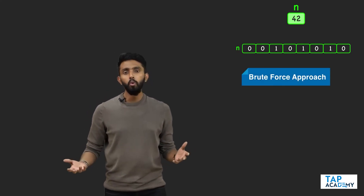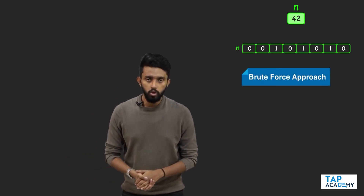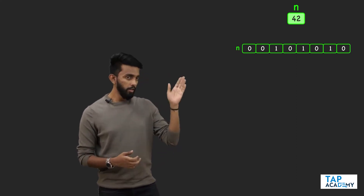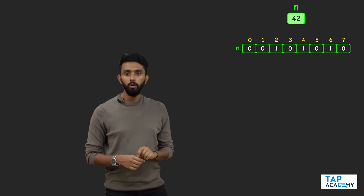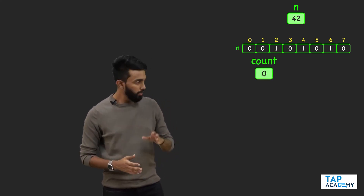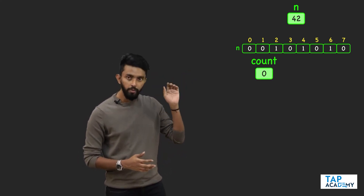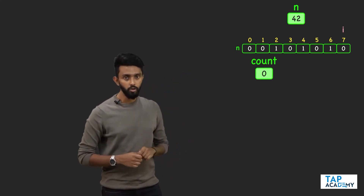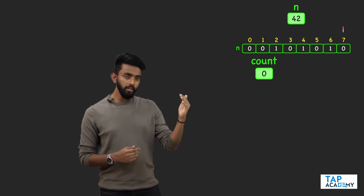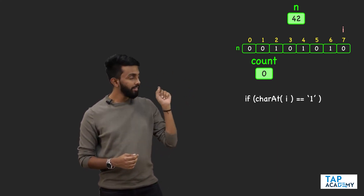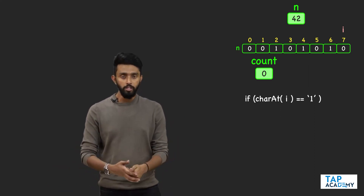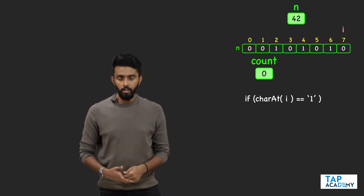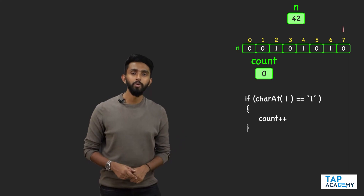A very simple brute force approach could look like this. You convert the number into a binary string. If it is a string, you have index values. You now maintain a variable called count, initialize it to zero. Start from the last index of the string, and then check if the character at the ith position is equal to one. If it is equal to one, you found a set bit and hence increment the value of count.